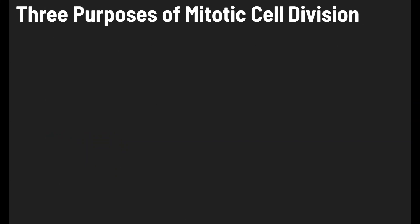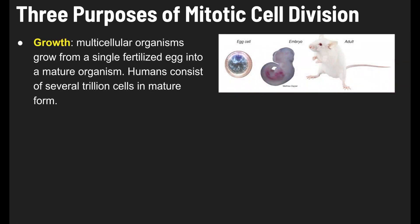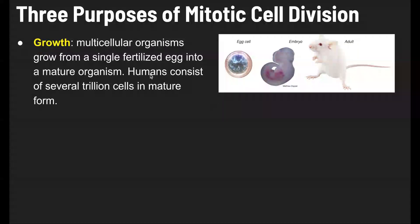Now let's talk about the three purposes of mitotic cell division. The first purpose is growth. Multicellular organisms grow from a single fertilized egg into a mature organism. This happens in humans, but here's what it looks like in a rat — you start with a single fertilized egg cell, it develops into an embryo, and eventually into a fully mature adult rat. Humans and rats consist of several trillion cells in their mature form.